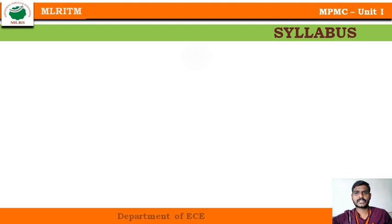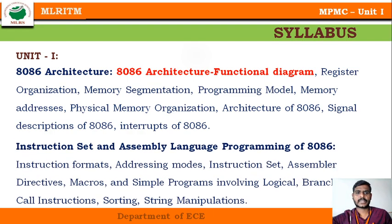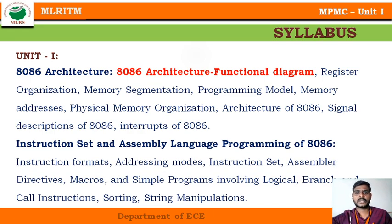The syllabus is grouped into five units. Unit 1 covers the basic architecture of the 8086, different modes of operation, signal description, and memory segmentation. The second part of Unit 1 covers different instruction sets, addressing modes, and simple programs involving logical, branch, and call instructions, so students gain basic knowledge and can write ALP programs using the 8086.